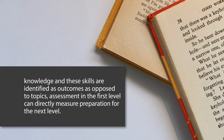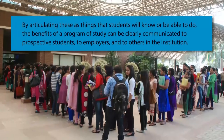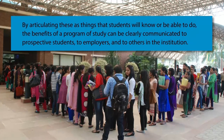When knowledge and skills are identified as outcomes — as opposed to topics — assessment in the first level can directly measure preparation for the next level. At the program level, many major and specialist programs identify a list of discipline-specific and multipurpose skills, values, and areas of knowledge graduating students will have. By articulating these as things students will know or be able to do, the benefits of a program of study can be clearly communicated to prospective students, employers, and others in the institution.